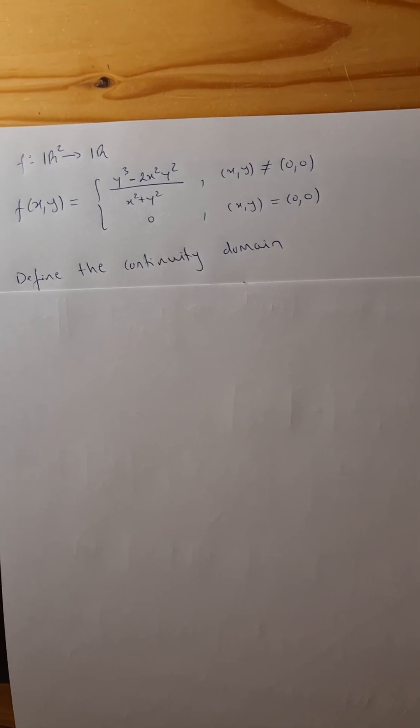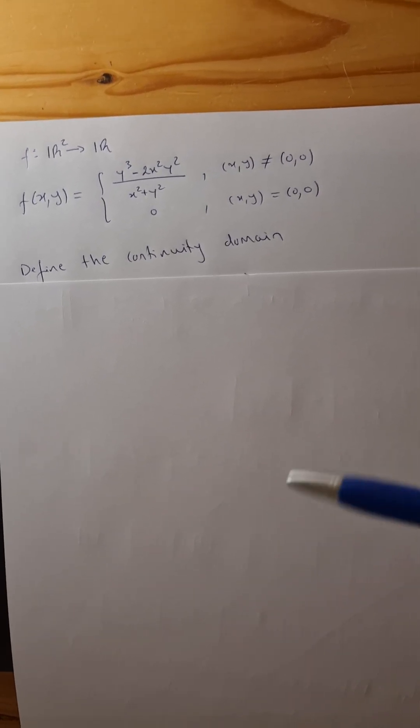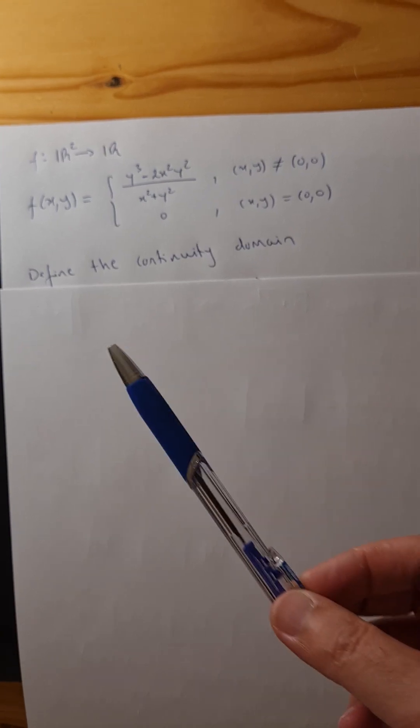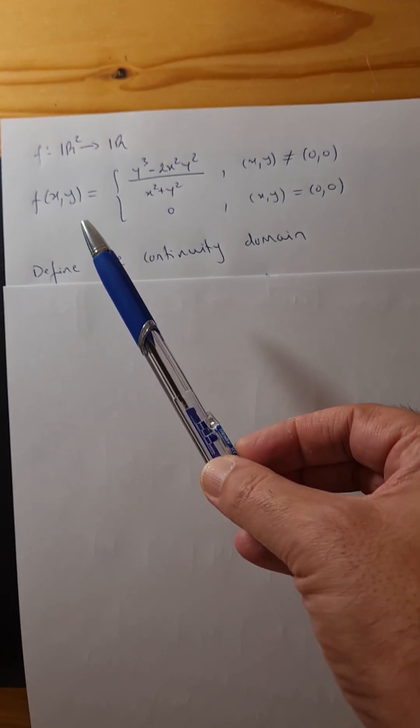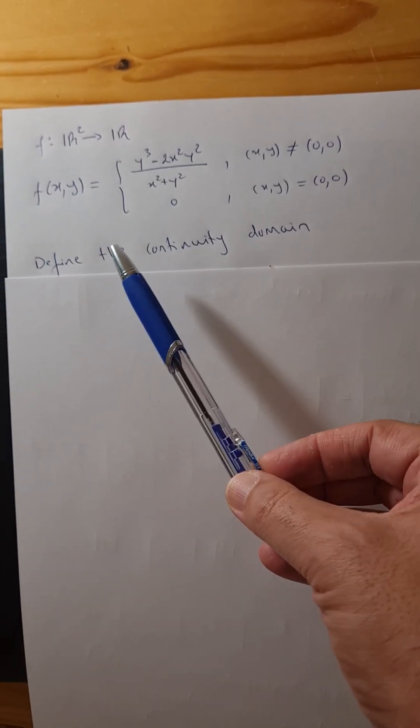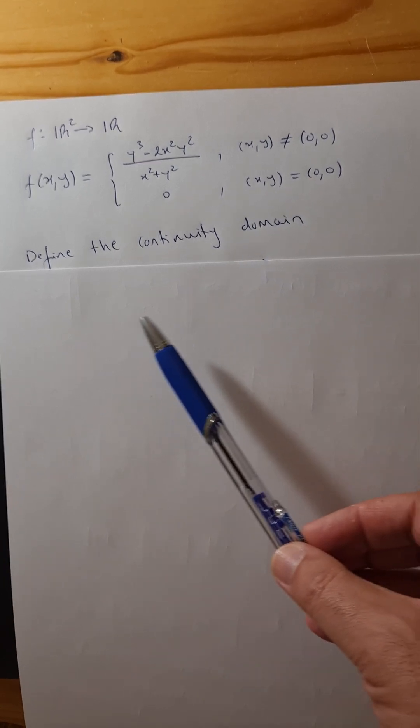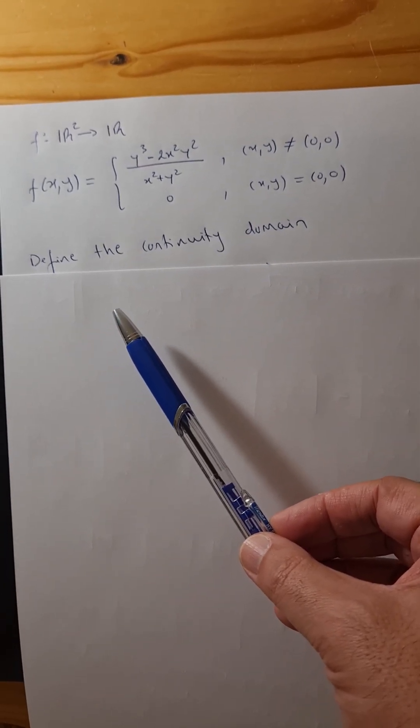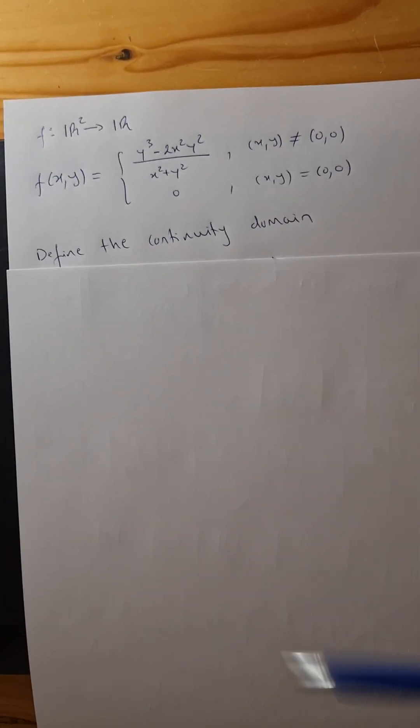I don't have my digital tablet so I'll do this quickly with my cell phone. The function is from R² to R and this is the function. You guys were asked to define the continuity domain.